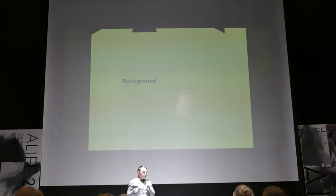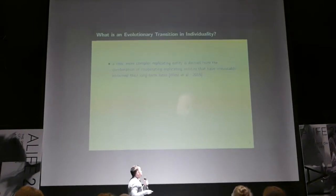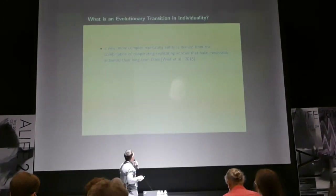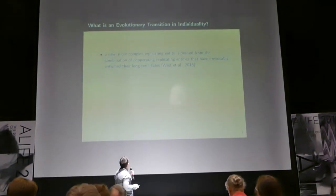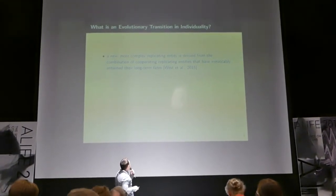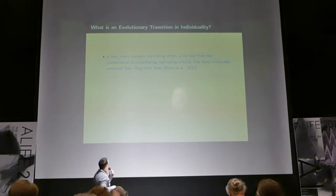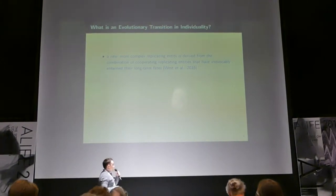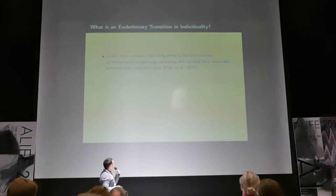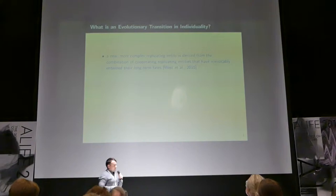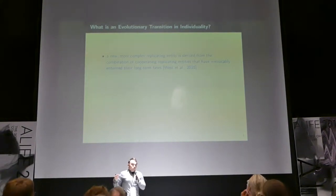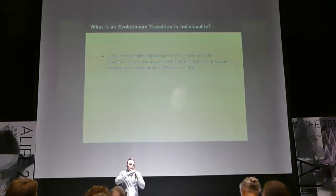We should start off by talking about what is an evolutionary transition of individuality. And I really like this quote, I think it's kind of poetic, so I'm just going to read it to you. An evolutionary transition of individuality occurs when a new, more complex replicating entity is derived from the combination of cooperating replicating entities that have irrevocably entwined their long-term fates.